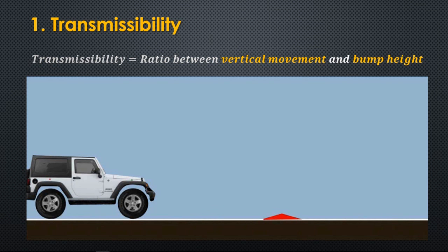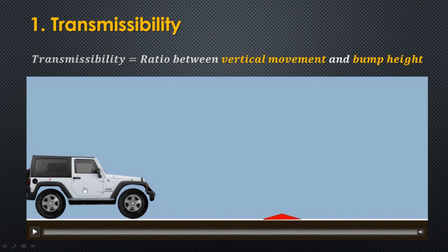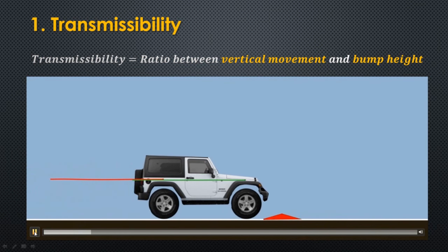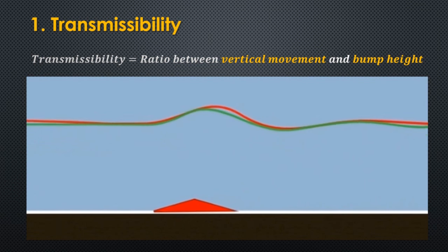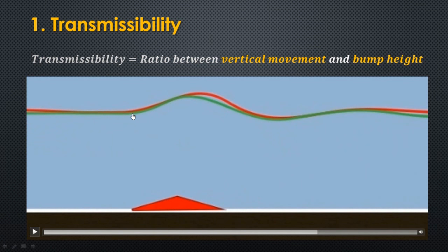Transmissibility is a really nice and easy-to-understand concept. Basically, transmissibility is the ratio between the vertical movement of the suspended mass — in this case of the car — and the bump height. In this quick simulation we are going to see how the body of the car, the suspended mass of the car, will react to the bump. The red and green lines represent the movements of the body of the car, the suspended mass, and as you can see in this case the car moves vertically almost the same as the bump height, so the transmissibility will be around 1.